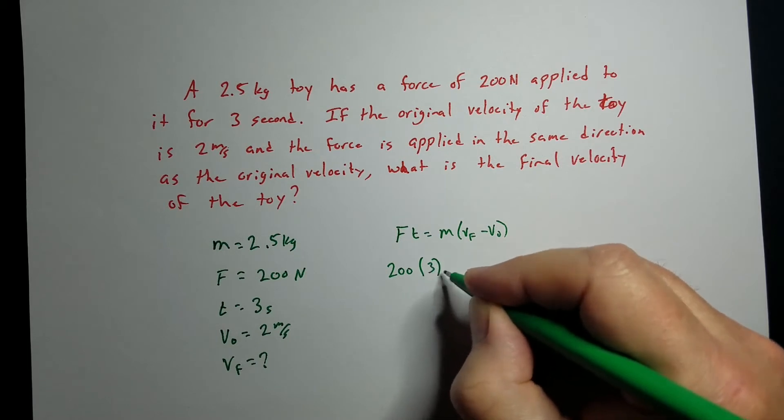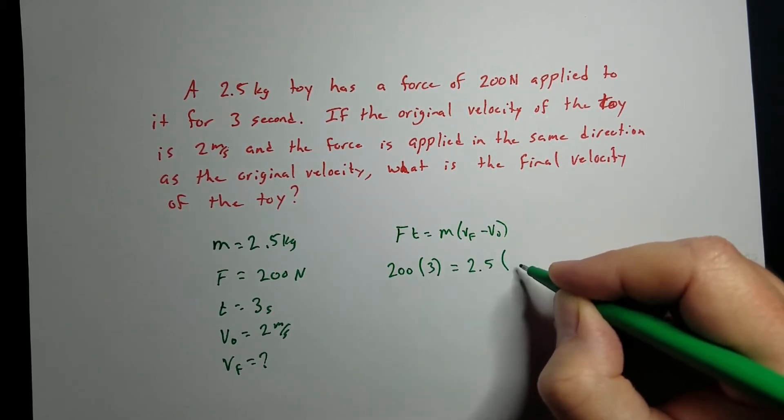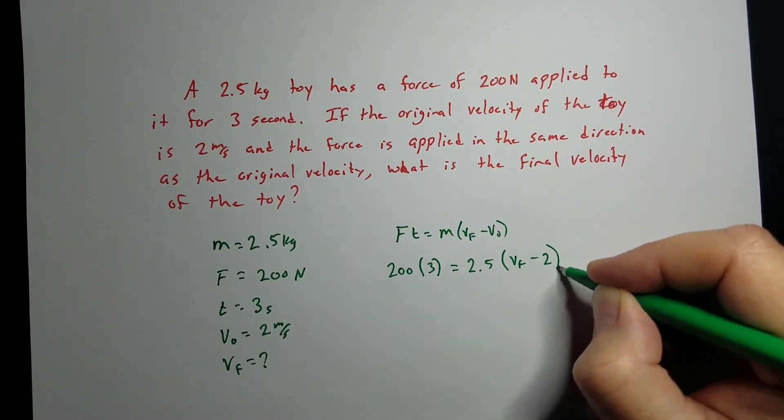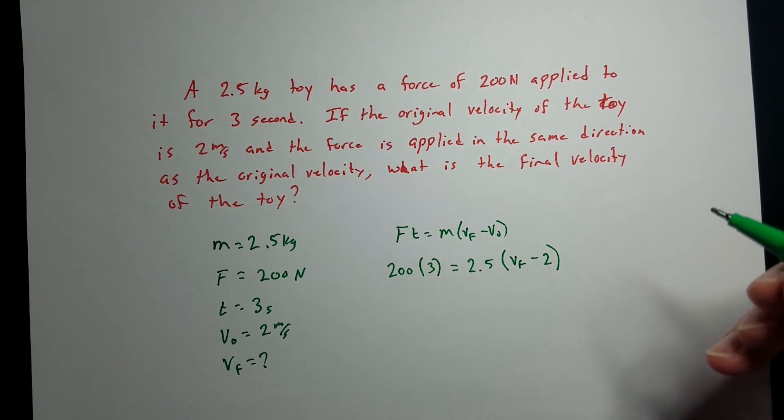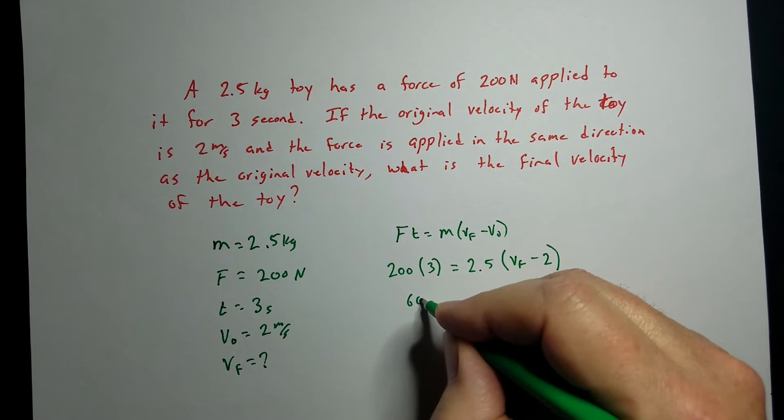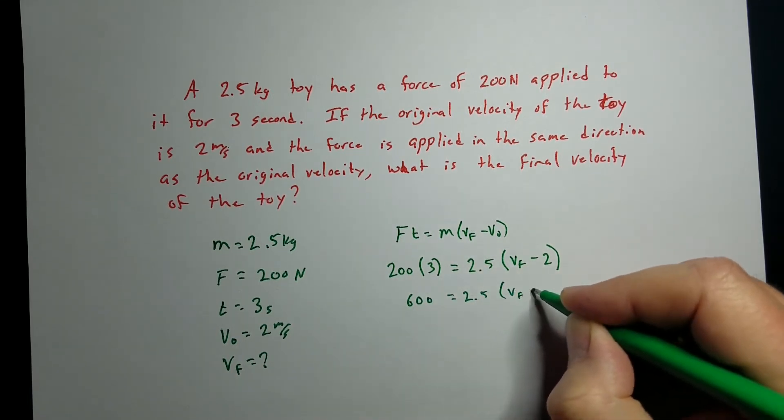So, force is 200. Time is 3 seconds. Equals the mass is 2.5. Final velocity we don't know, but the original velocity is 2. So, we can start working on the math that we've got here. I've got 600 equals 2.5 Vf minus 2.